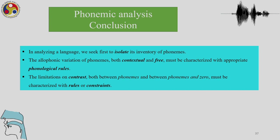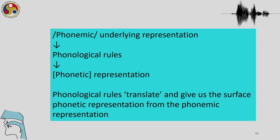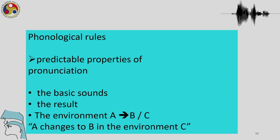Let us look at a standard rule-based approach to analyzing a phonological problem. First, we have a phonemic underlying representation which undergoes phonological rules, giving us a phonetic representation as the result. Phonological rules translate the phonemic representation into the surface phonetic representation. They show predictable properties of pronunciation: first we find the basic sounds, then the rule is applied to give the result, and the environment is expressed as A changes to B in context C.